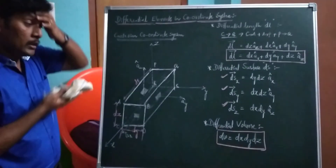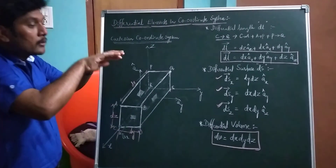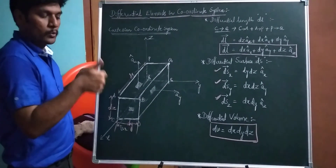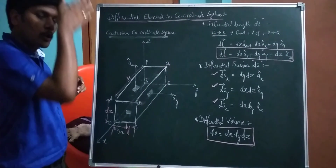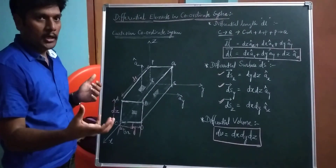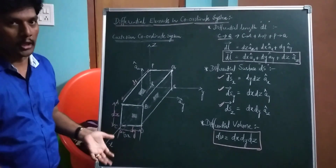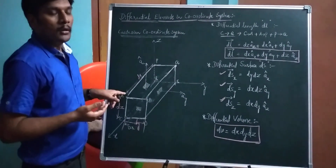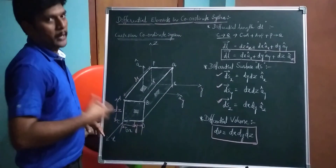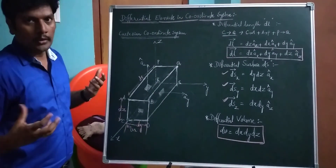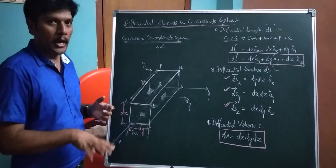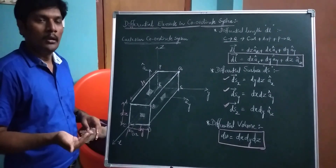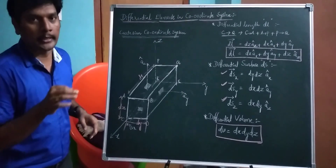The differential volume: the product of the enclosed surfaces gives the volume. We have three dimensions — dx, dy, and dz — one side along x, one along y, and one along z. The product of these three gives the volume of the object. Therefore, the differential volume dv = dx·dy·dz. This knowledge is essential to evaluate line integrals, surface integrals, and volume integrals in electromagnetic theory.